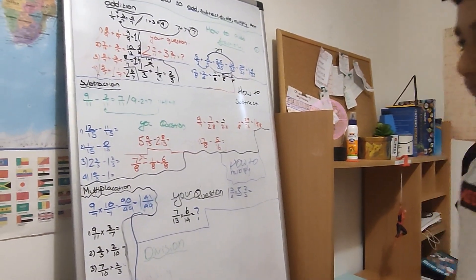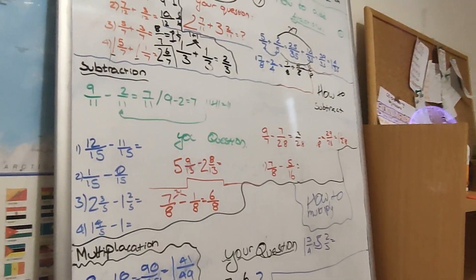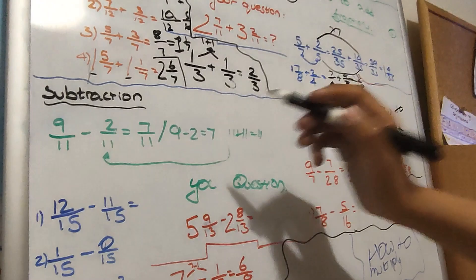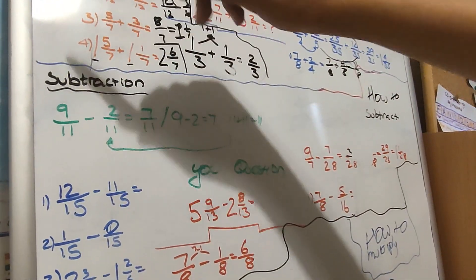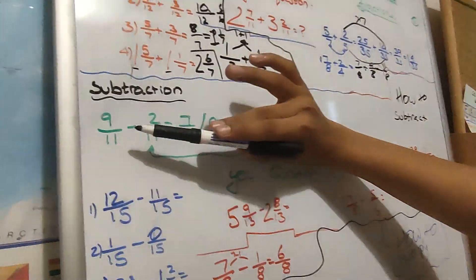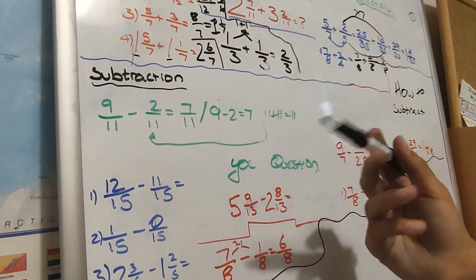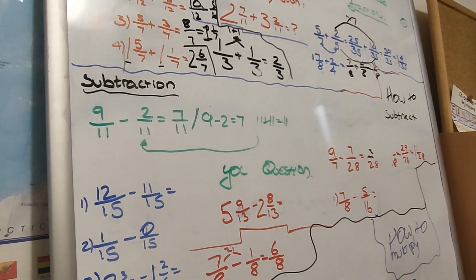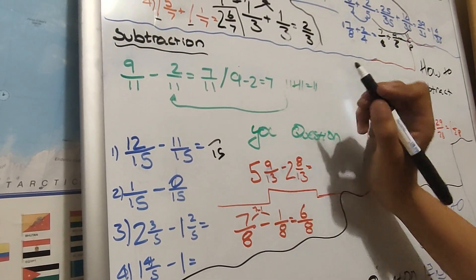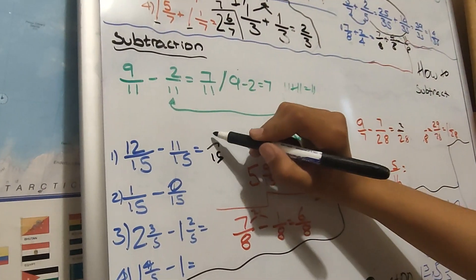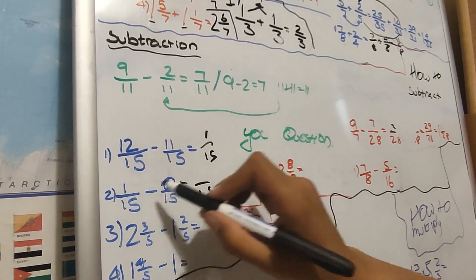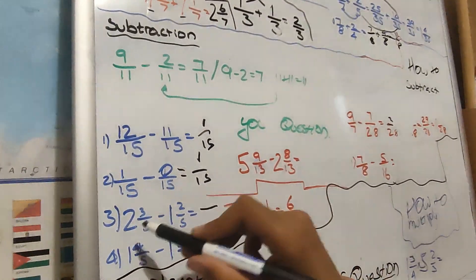So next we're going on to subtraction. This is like addition but you just subtract the numerators, not the denominators. Keep the denominator the same and just subtract the numerators rather than adding them. So we keep the denominator the same which is 11. Just do 9 take away 2 which is 7. Again, really simple — just do the numerators minus them and the denominator is always the same. As we know, the denominator is 15 and stays the same. 12 minus 11 is 1.